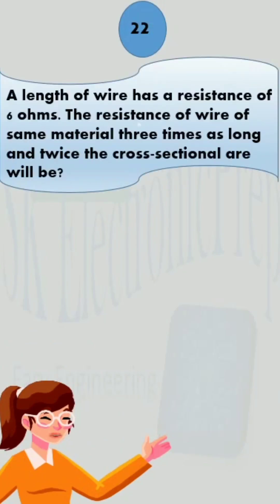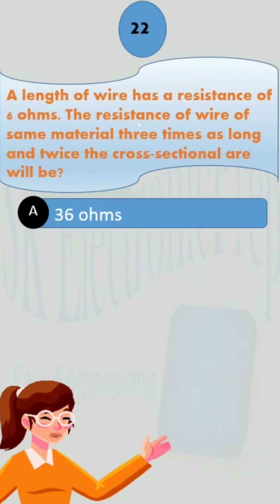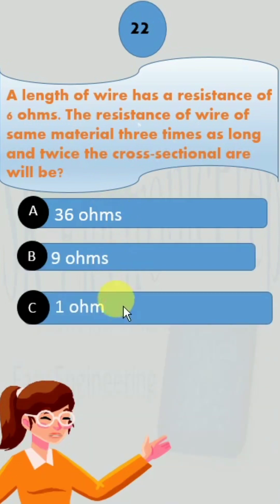A length of wire has a resistance of 6 ohms. The resistance of wire of same material three times as long and twice the cross-sectional area will be: option A, 36 ohms; option B, 9 ohms; option C, 1 ohm; and option D, 5 ohms.